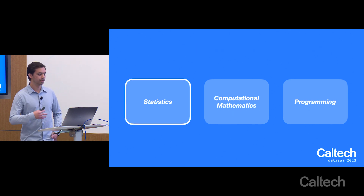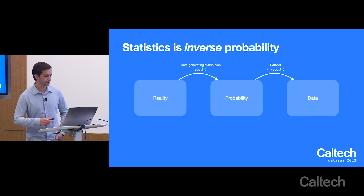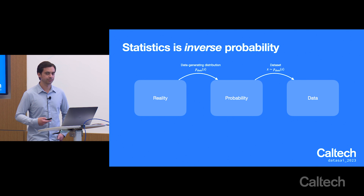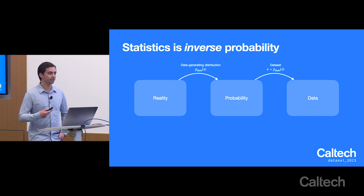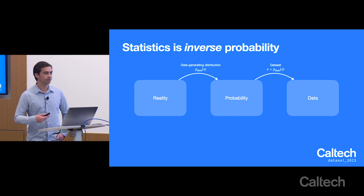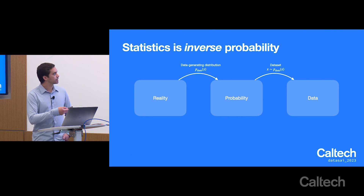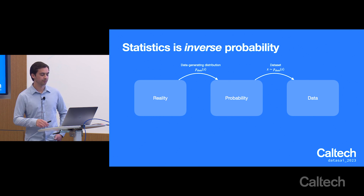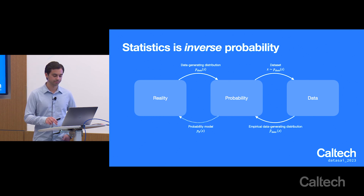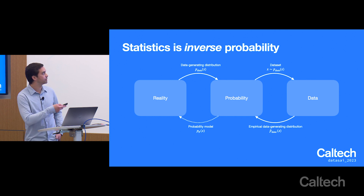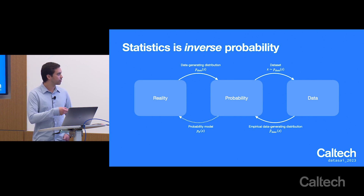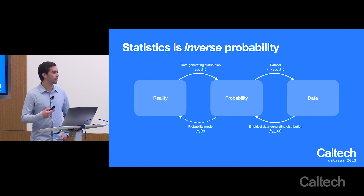Starting with the first module — machine learning statistics. Statistics, in a manner of speaking, is a form of inverse probability. We have some reality that we're trying to ask questions about, and this reality can be formulated through some probability distribution. However, we can only sample a few samples from that probability distribution, and we do not know that data-generating distribution exactly. The job of statistics is taking this empirical data-generating distribution, which is an approximation, and fitting it to some probability model to get some idea of how reality works.